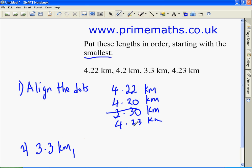All these are the same. Look at the second decimal place. 0 is less than 2 and 3, so the next one would be 4.2 kilometers. Strike it through.